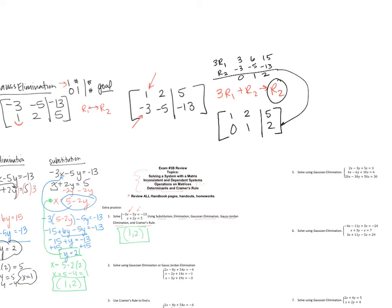The matrix is now in the form I needed. Rewriting: x plus 2y equals 5 and y equals 2. Back substituting: x plus 2 times 2 equals 5, so x plus 4 equals 5, giving x equals 1.